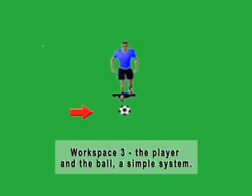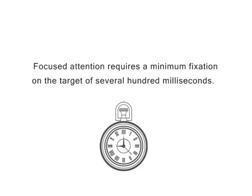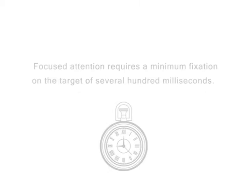To compensate, we can switch the foveal view to a new target. That's divided attention, which we saw in part five. But for divided attention to work, you'll need to fix the gaze for a hundred milliseconds or longer. It's not much, but it is measurable time.